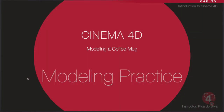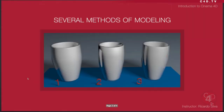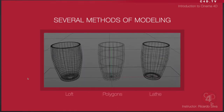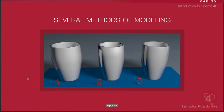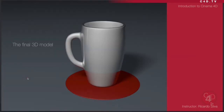Hello, and welcome to another Cinema 4D tutorial. My name is Ricardo Silva, and today we're going to be finishing the modeling of a coffee mug. In this tutorial, I'm going to show you how to go from three different objects to this particular one.